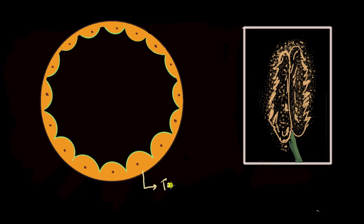This is tapetum, and why is it so important? Because the cells here are big, have a lot of cytoplasm, and provide nourishment to the cells growing inside. It has many other functions which we will discuss when we come across them.